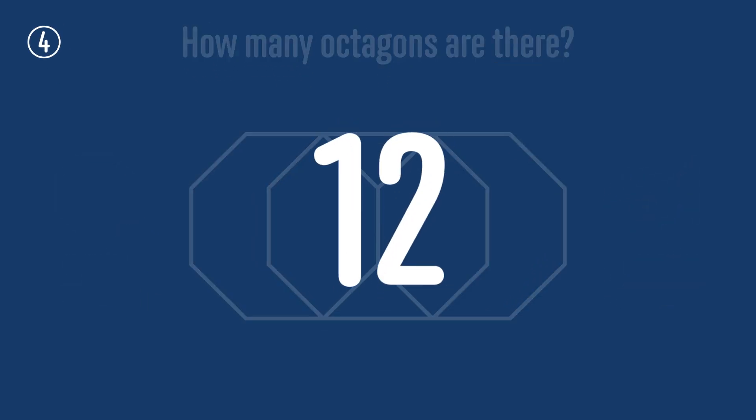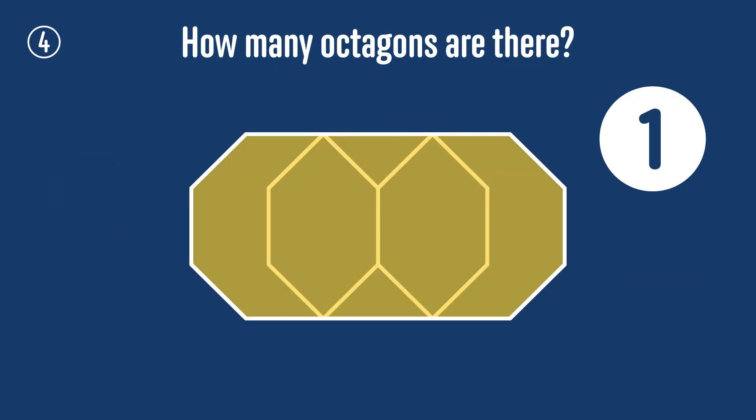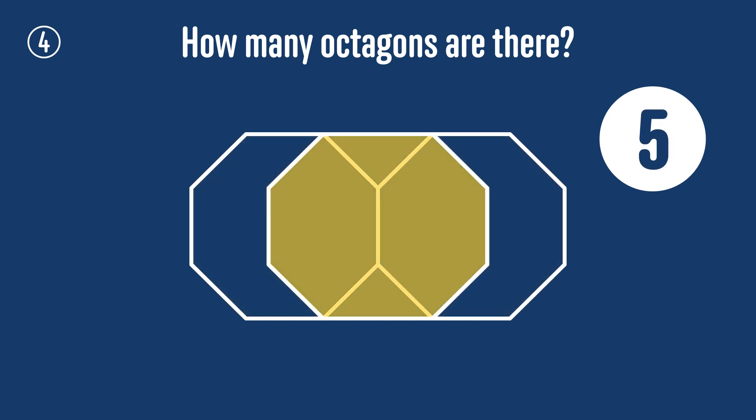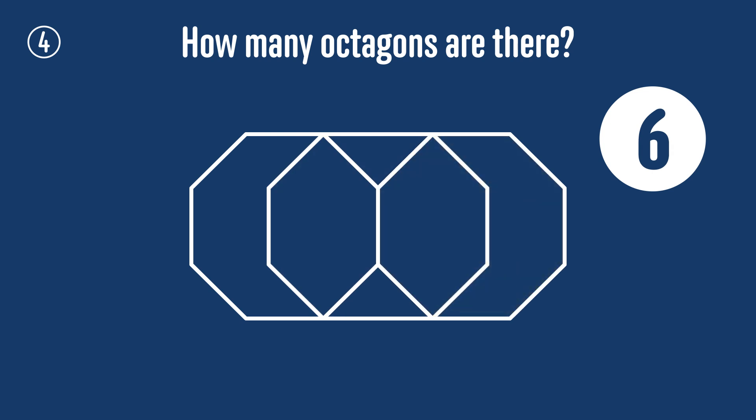There are 12 octagons in total. Firstly, the whole shape is an octagon, so that's one. Then there are these two slightly smaller octagons, and then these three that are even smaller than those. So we've found six so far.